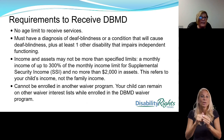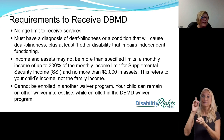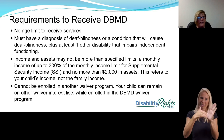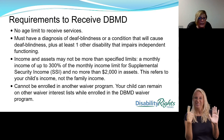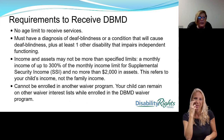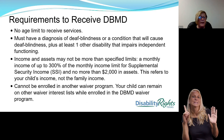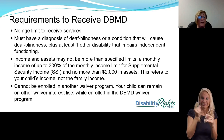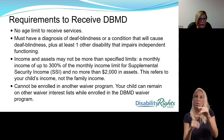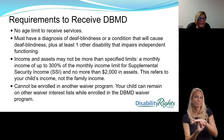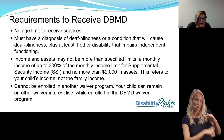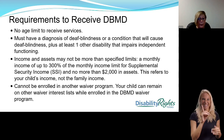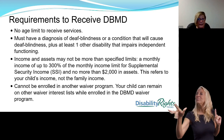The requirements to receive DBMD: there is no age limit to receive the services. You must have a diagnosis of deaf-blindness or a condition that will cause deaf-blindness, plus at least one other disability that impairs independent functioning. Income and assets may not be more than 300% of the max of SSI, there cannot be more than $2,000 in resources, and you cannot be enrolled in another waiver program if you are receiving DBMD.